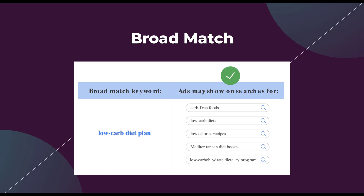Last is broad match. Now we can see a more realistic example — "low carb diet plan" will match to: carb-free foods, low carb diets, low calorie recipes, Mediterranean diet books, and low carbohydrate dietary program. The one that's probably furthest out there is Mediterranean diet books. To be completely honest, even these examples are being very generous to how I've seen Google broad match work. Broad match can be very broad in some accounts, so they're putting it in the best light here, but this does give you an idea of how much further it will go compared to phrase and exact.